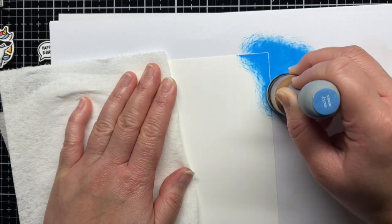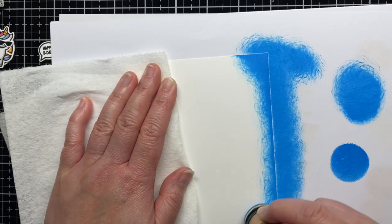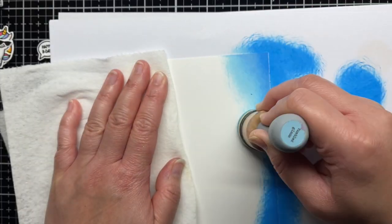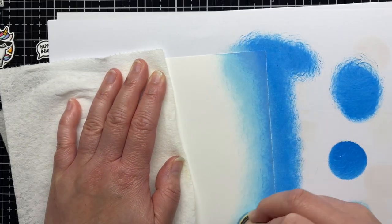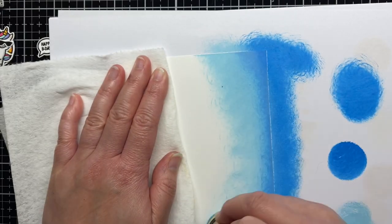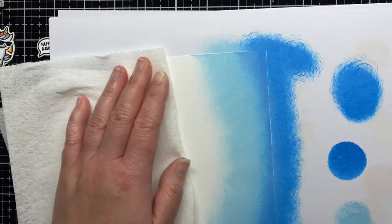I blend my sky on an A2 panel. I use Salty Ocean and Tumbled Glass Distress Oxide ink. I start with my blending tools, but the pads are a little old and left a bit of a scratchy pattern on my paper, so I go back in with blending brushes to smooth it all out.